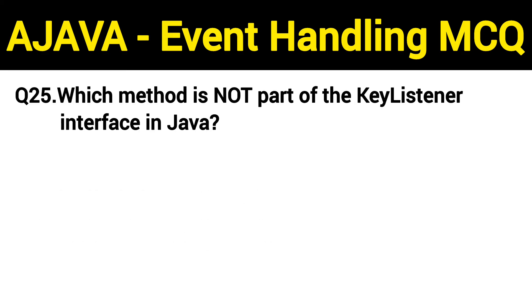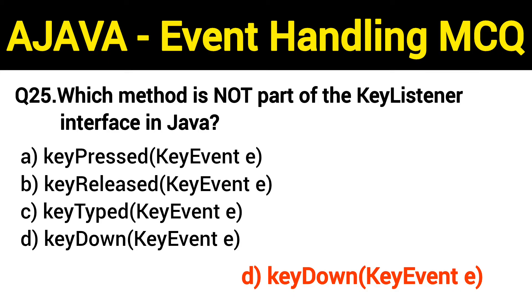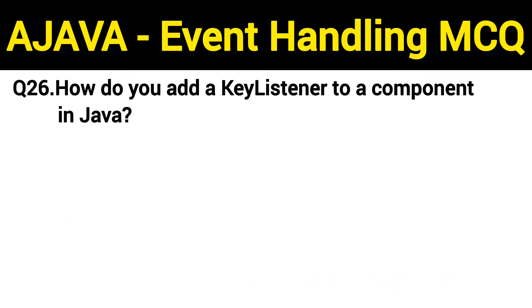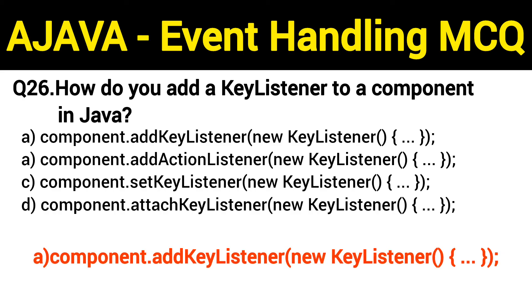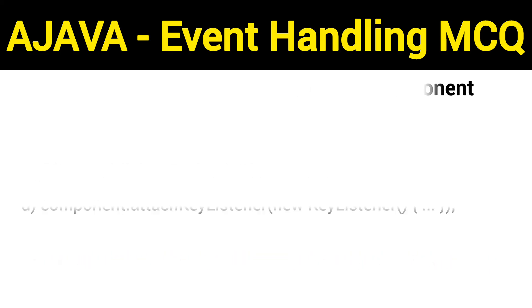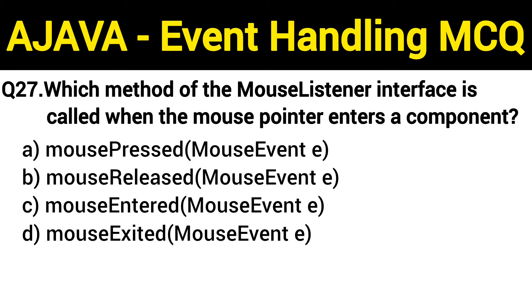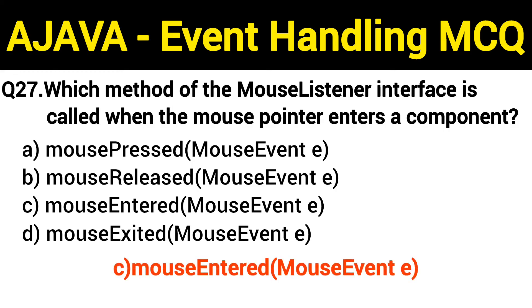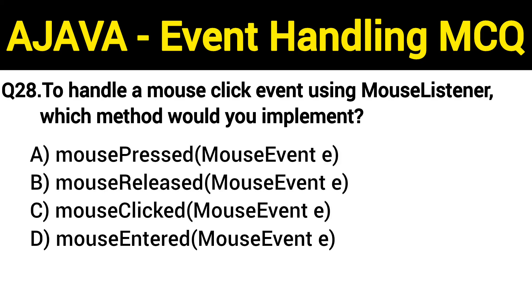Question number 25: which method is not part of the KeyListener interface in Java? The right answer is option D: keyDown(KeyEvent) method. Question number 26: how do you add a KeyListener to a component in Java? The right answer is option A: component.addKeyListener() method. Question number 27: which method of the MouseListener interface is called when the mouse pointer enters a component? The right answer is option C: mouseEntered() method.